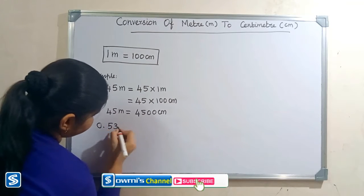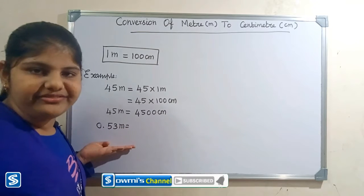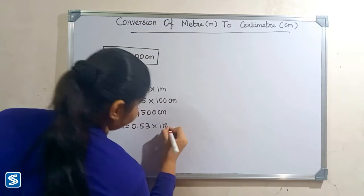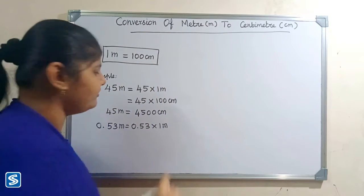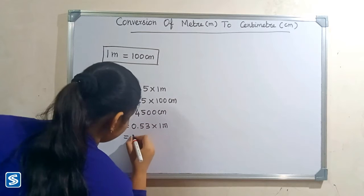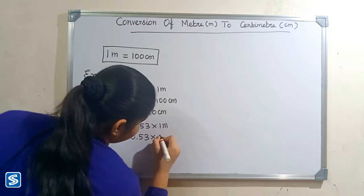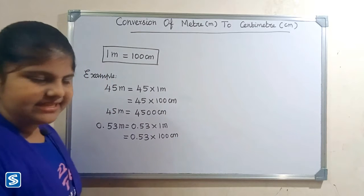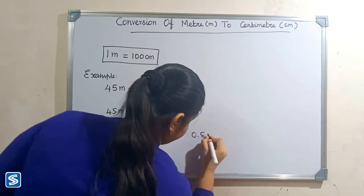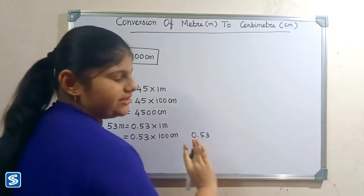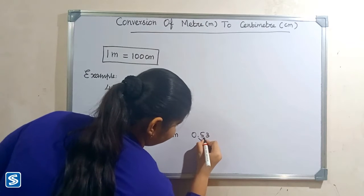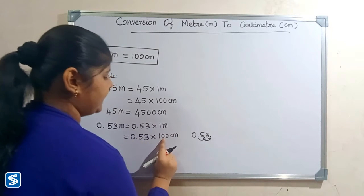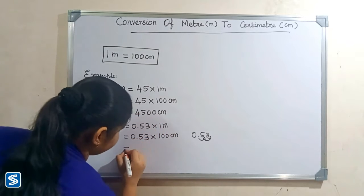Next we will take another example: 0.53 meters. 0.53 meters can be written as 0.53 multiply one meter. Now we have to substitute 100 centimeters in the place of one meter, so 0.53 multiply 100 centimeters. The easy way to multiply by 100 is to move the decimal point two places to the right — so 1, 2.